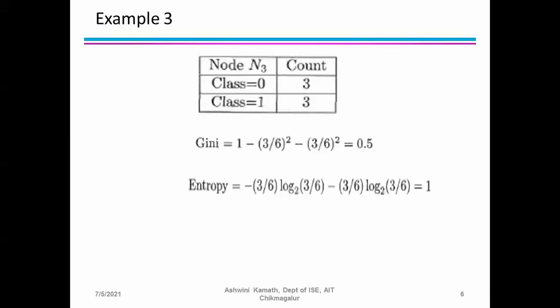When the classification belongs to a single class, entropy gives 0 — since 0·log₂(0) = 0. When values are equally distributed across both classes, entropy equals 1. The misclassification error = 1 − max(3/6, 3/6). Both values are the same at 50%, so the answer is also 0.5.